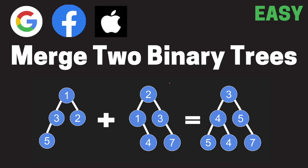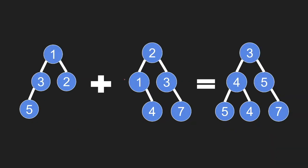Today we're going to be looking at an easy problem on LeetCode called 'Merge Two Binary Trees.' The problem description says you are given two binary trees and your task is to take one of these trees and overlay it on top of the other one such that the root nodes align with each other.